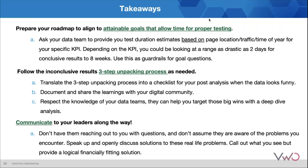Lastly, communicate to your leaders along the way. Don't have them reaching out to you with questions — it's never a good thing to be in the principal's office for something you could have addressed. If you know three quarters of the way through your test that you're running into inconclusive roadblocks, go ahead and share that narrative and say 'I don't think things are going right, so we're going to start unpacking.' If something can be run concurrently that still answers another question, go ahead and run the other one. Make sure you're checking your setup and using unpacking tools so tests moving forward won't run into the same issues.